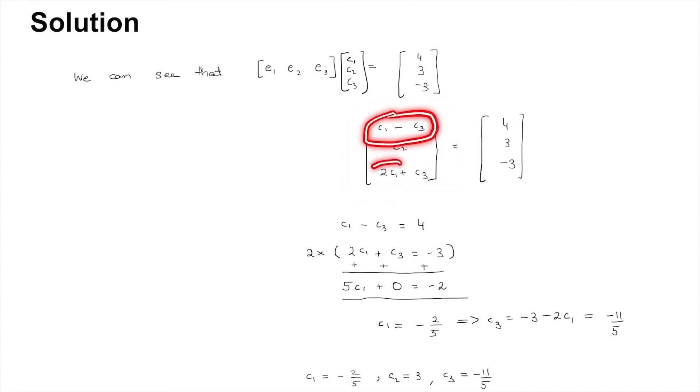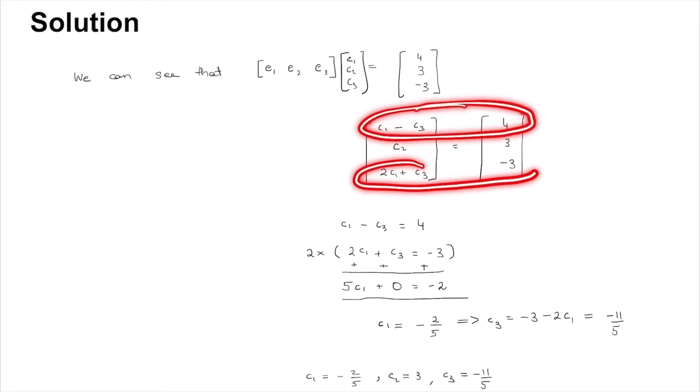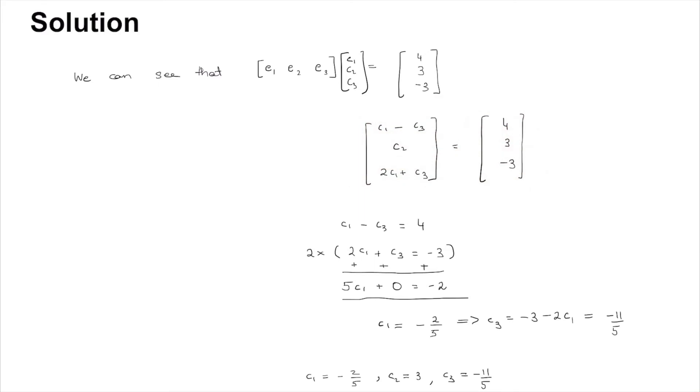So these two are the simultaneous linear equations for c1 and c3. We will write that separately. And you can directly tell that c2 equals 3 from here.